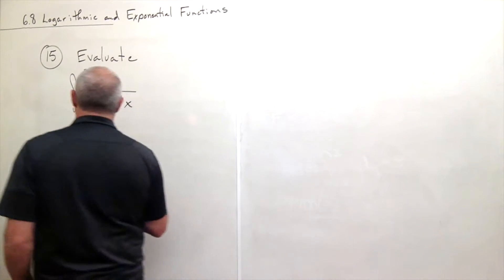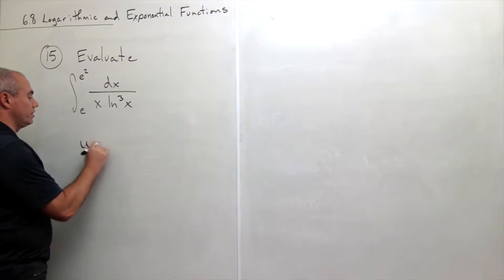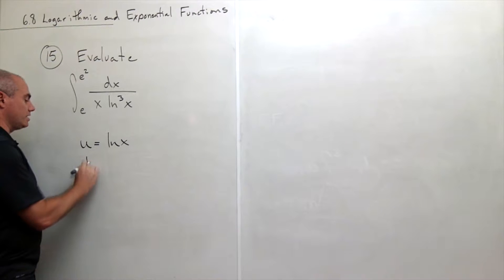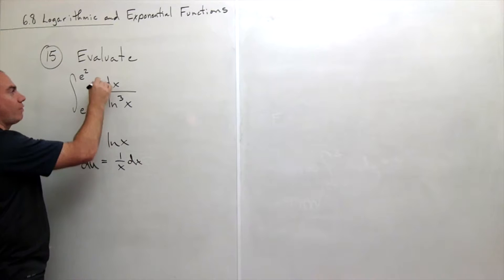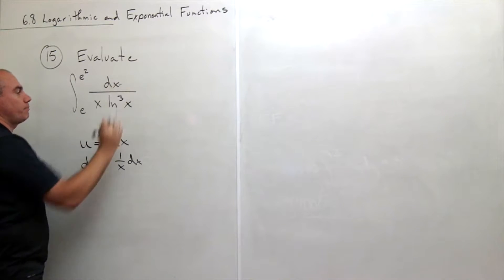So what I'm going to do is let u be equal to ln of x, meaning that du would be 1 over x dx. And you notice I have a 1 over x dx sitting here so that's perfect.